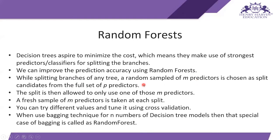While splitting the branches of any tree, a random split of m predictors is chosen as split candidates from the full set of p parameters. The split is then allowed to use one of those m predictors. A fresh sample of m predictors is taken at each split — you can try different values and tune this using cross-validation. When you use bagging technique for n number of decision tree models, that special case of bagging is called Random Forest.